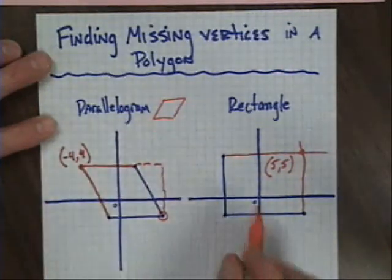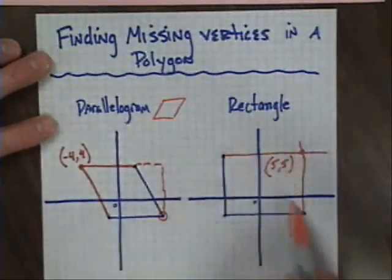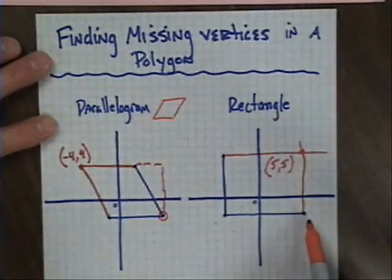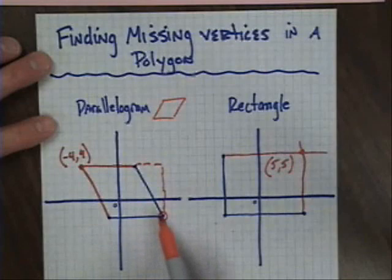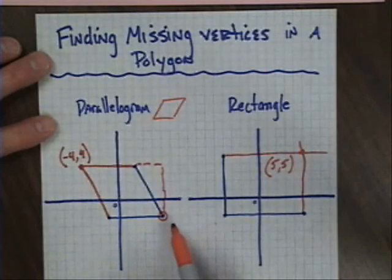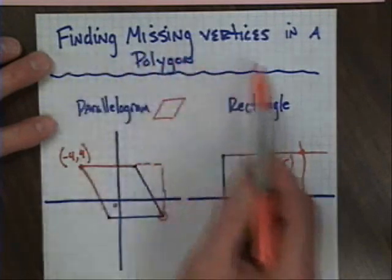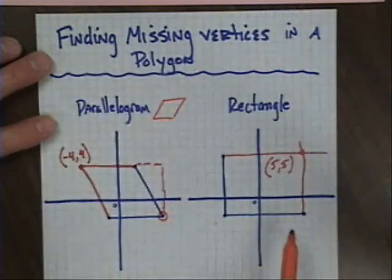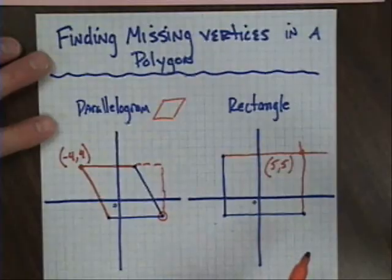As you can see, whether it's a rectangle — which is more straightforward — or a parallelogram where you have to involve concepts of slope, finding missing vertices in a polygon is reasonably easy.